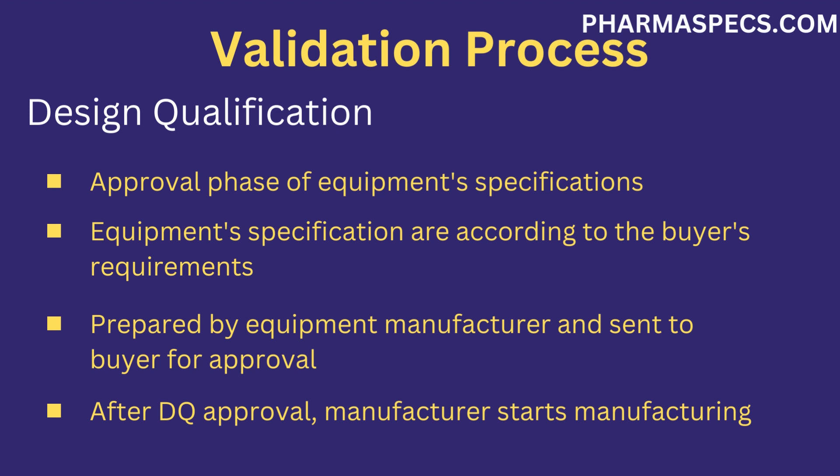In the design qualification stage, the specifications of equipment are checked to determine whether they are according to the buyer's requirements. The design qualification is prepared by the manufacturer and is sent to the buyer. The equipment buyer verifies it according to their needs and either approves it or does not approve it. When the DQ is approved by the buyer, the manufacturer starts manufacturing the equipment; otherwise, the manufacturer is bound to include all the required specifications in the design qualification phase.